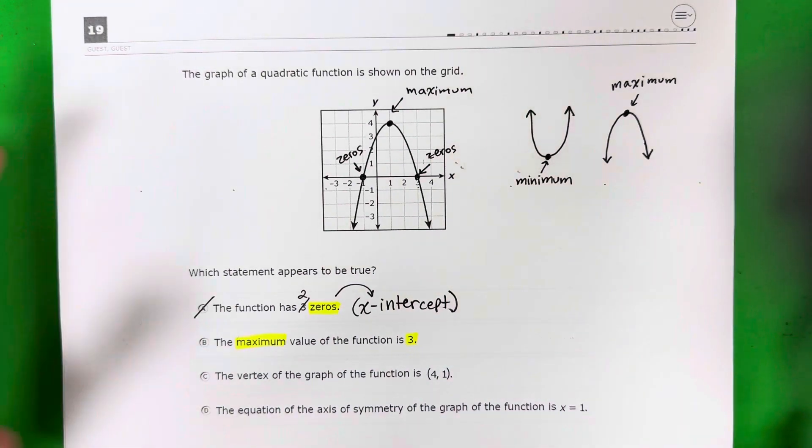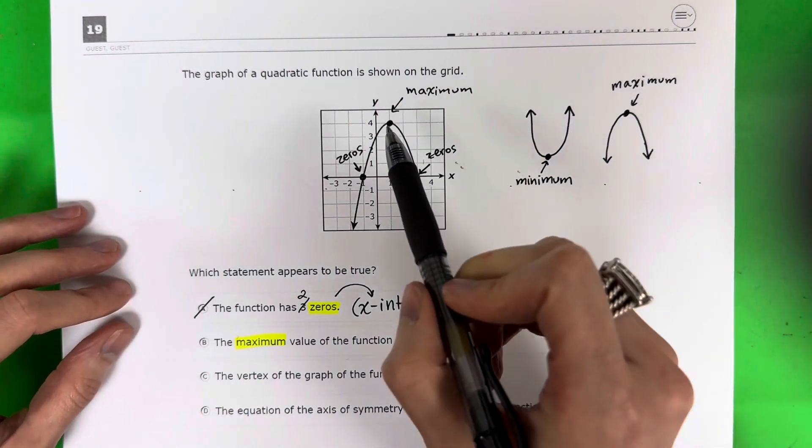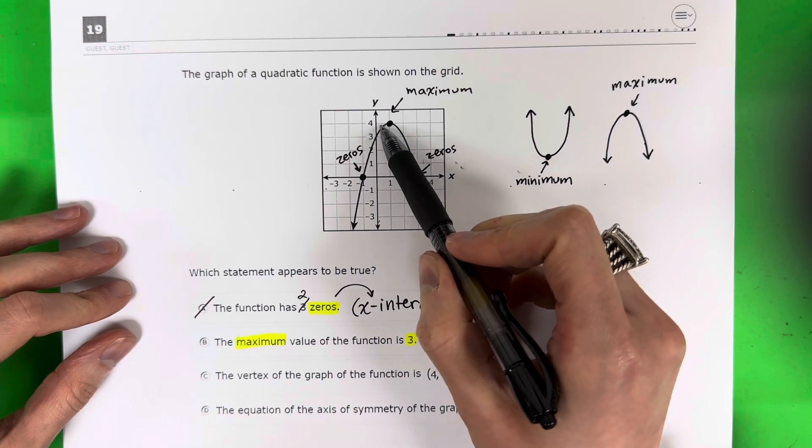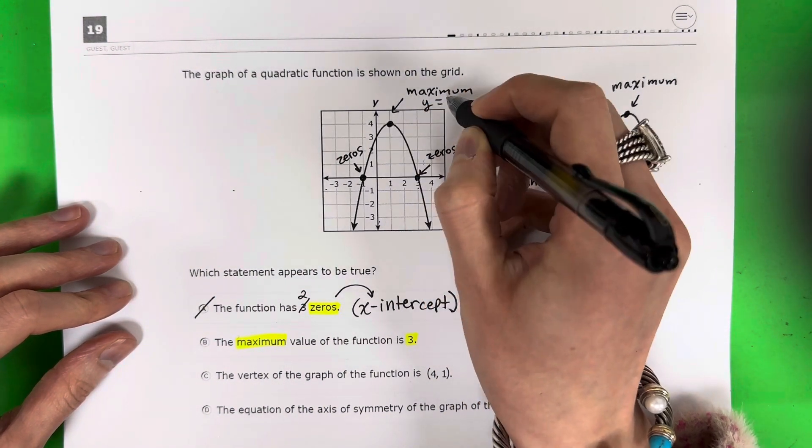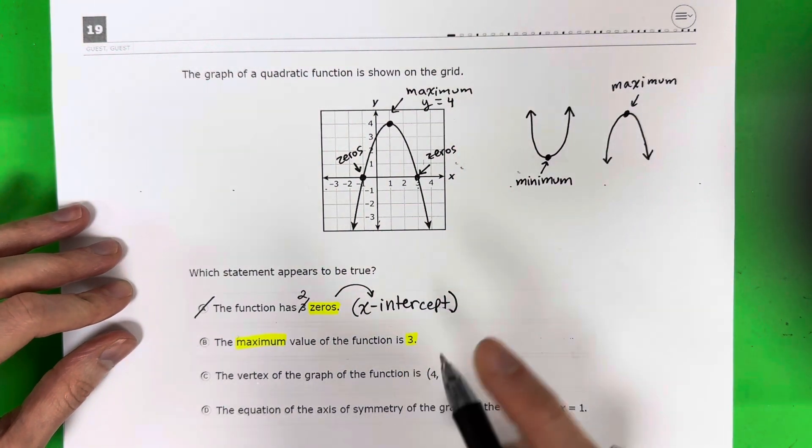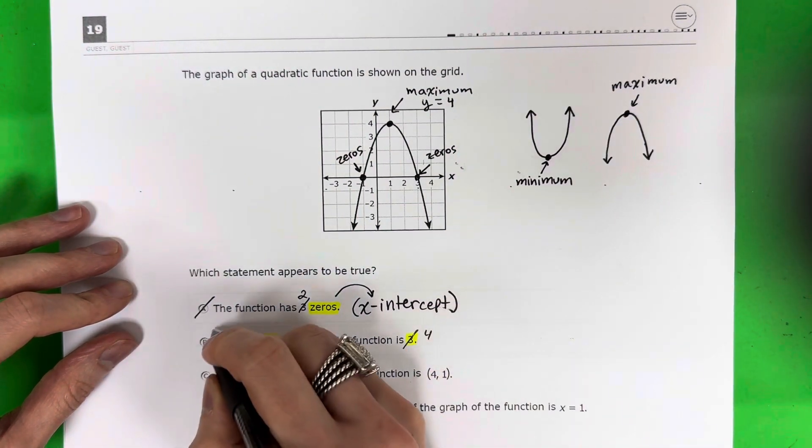And minimum and maximum are like height. Okay, so height would be y. What's the maximum for this? So maximum is y. What's the y for this? It's 4. Okay, so it's not at 3. It's at 4. So that is not correct.